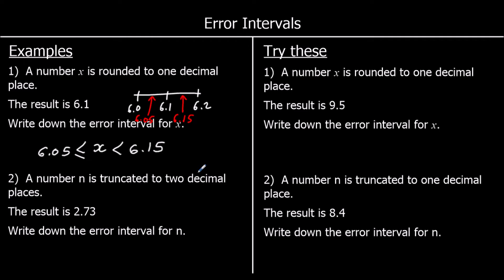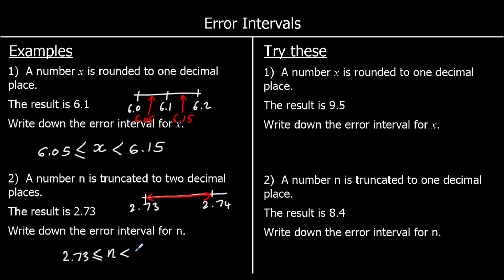The second one: a number n is truncated to two decimal places — that means it's been cut off after two decimal places — and the result is 2.73. Write the error interval for n. So it could have been anything that starts with 2.73, all the way up to 2.74. So n is greater than or equal to 2.73 and less than 2.74. It can be 2.73999, but if it becomes 2.74, then it would truncate to 2.74. So it can equal 2.73 and it can't equal 2.74.